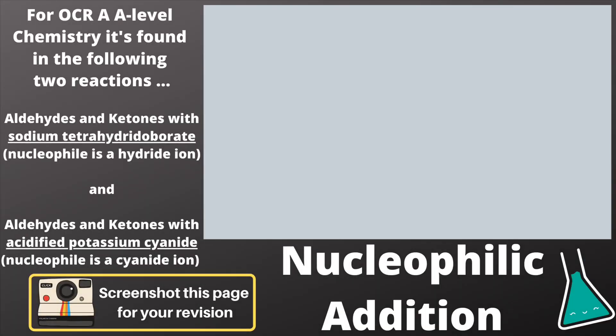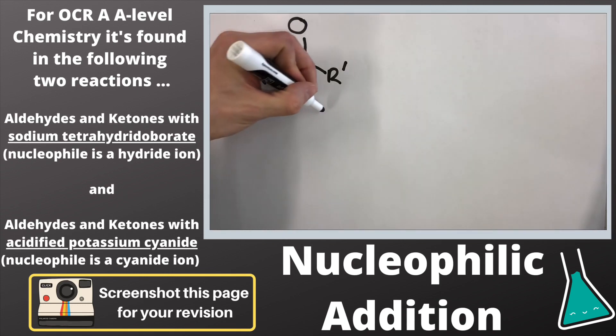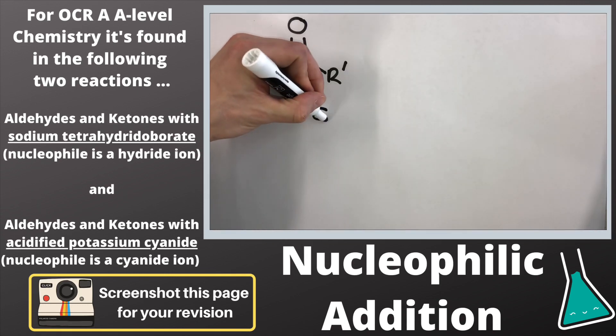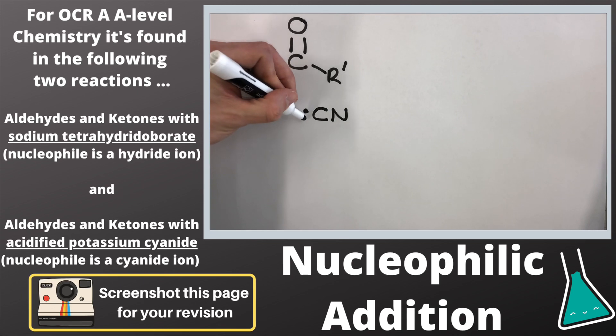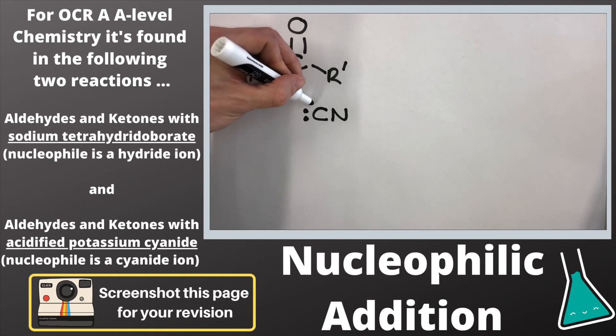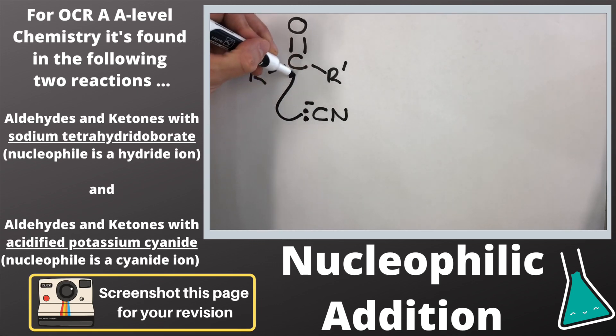The second example of the nucleophilic addition mechanism is when aldehydes and ketones react with acidified potassium cyanide. This provides us with a CN minus nucleophile - the negative charge and lone pair are shown on the carbon. This lone pair attacks the delta positive carbon in the C double bond O group.